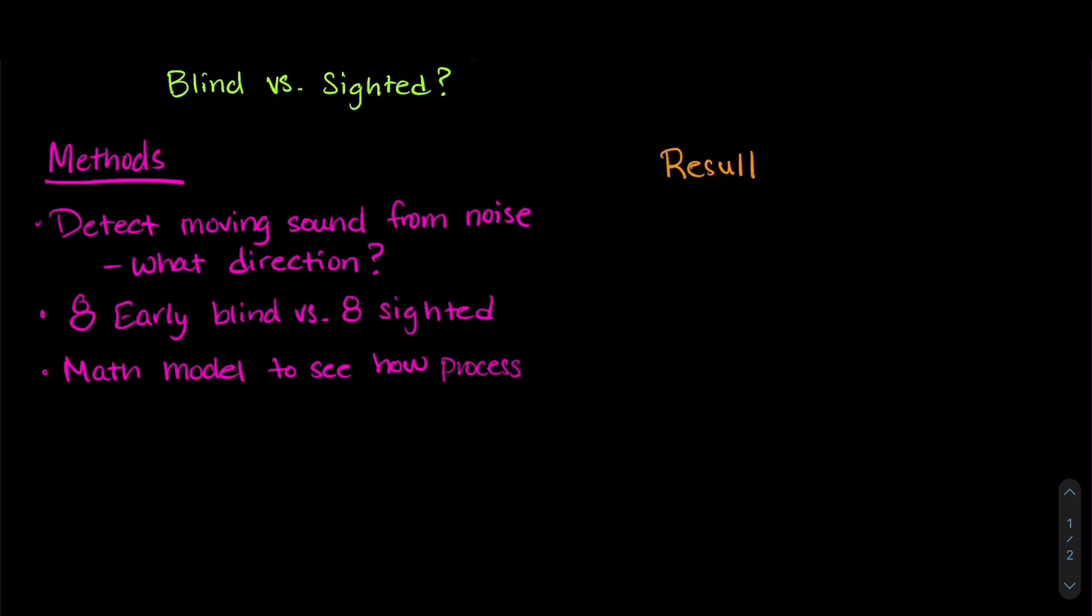So what did they find? Well, sighted and early blind people process these sounds in the same way, in the same manner. But early blind participants were much better at detecting which direction the sound was moving when there was background noise.